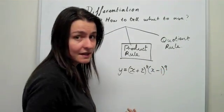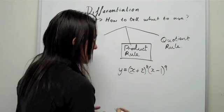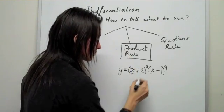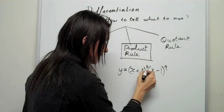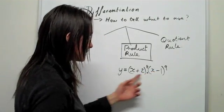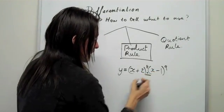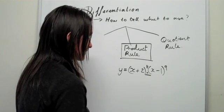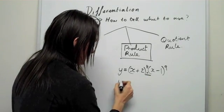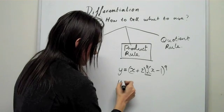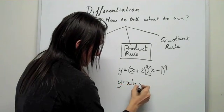You can't be bothered expanding that out because it's hard work. What you can do is use the product rule, because between these two brackets you have a multiplication, making a product out of two brackets. A product rule can sometimes be deceiving—things that are really short can still be a product rule.